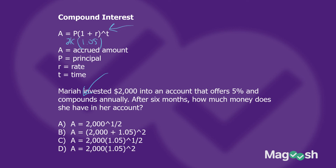Looking at answer choices A through D, I can right away eliminate B and D because they have 2 as an exponent. Then I look at A, and it doesn't capture the 1.05 the way C does. And just like that, without even having to solve anything, I know the correct answer. That's how the test is going to test this concept — now you know.